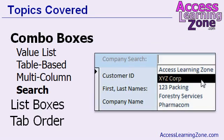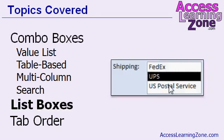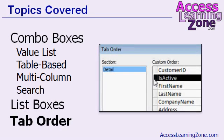You'll learn how to create a combo box to search for a record based on a field. Then we'll learn how to create list boxes, which are basically always-open combo boxes. And finally, we'll learn how to adjust the tab order on your forms.